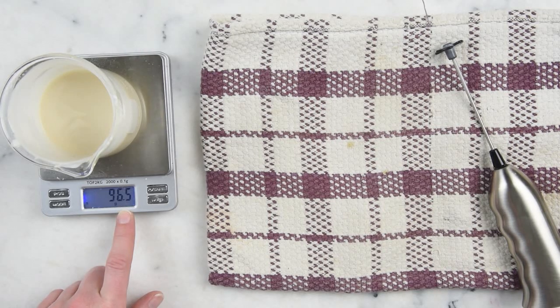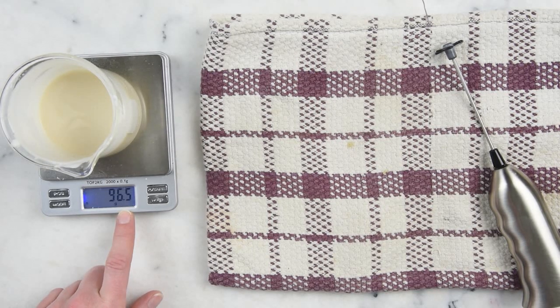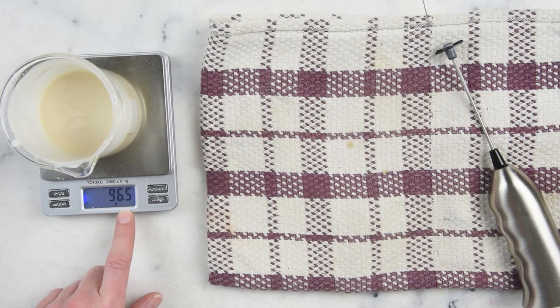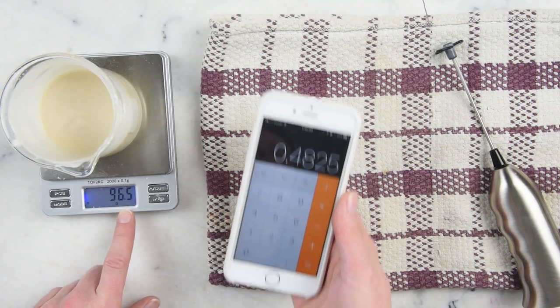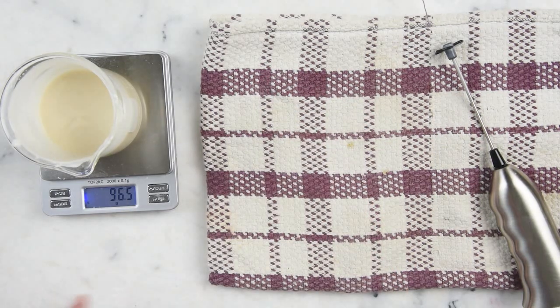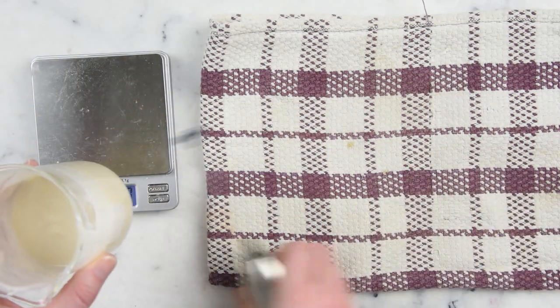So that's 96.5 grams. And then we multiply that by 0.005 for half a percent. And that is 0.48 grams of preservative. And that's for liquid germol plus.